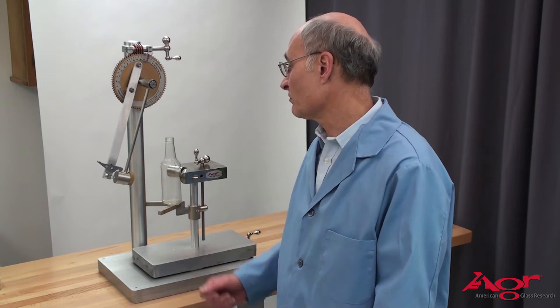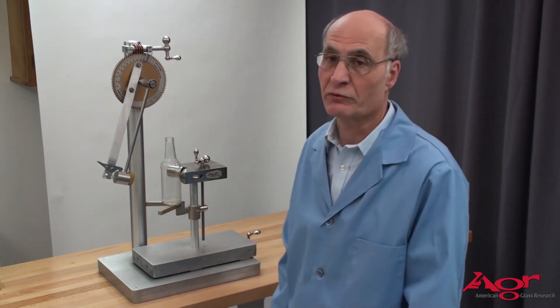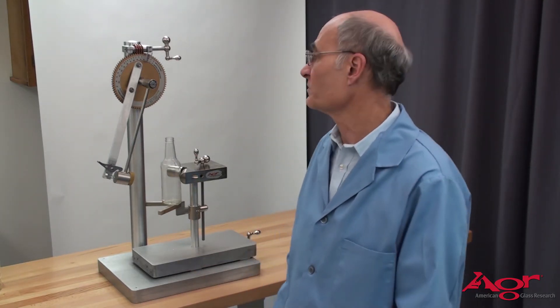On this sample, we have a bottle that has a more severe defect than the last sample, so we'll repeat the testing on it to determine the breaking level.